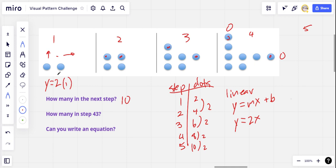Two times one is two, that's how many dots we have. Here, two times two, that's four, that's right. Here, two times three, that's six, that's how many dots we have. So our equation is simply y equals 2x, two times the step number.